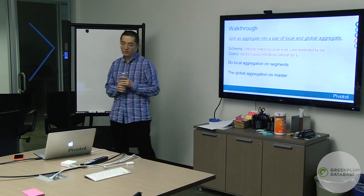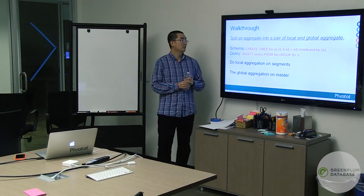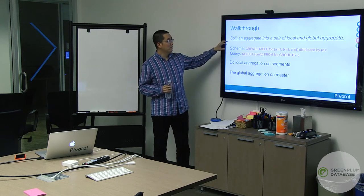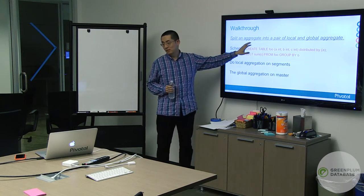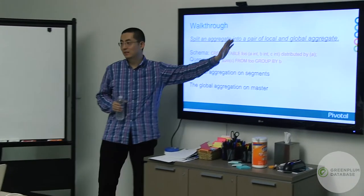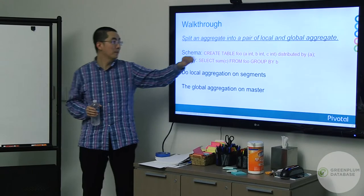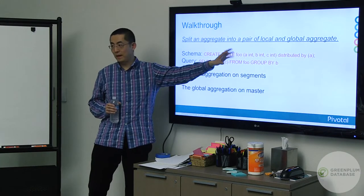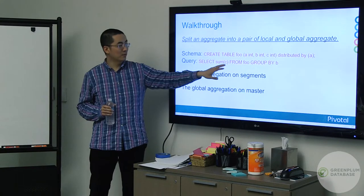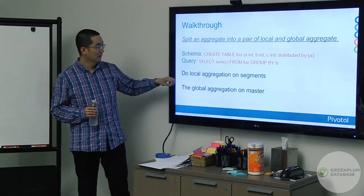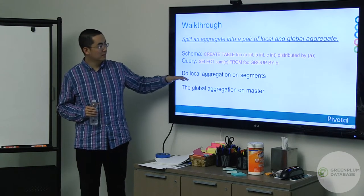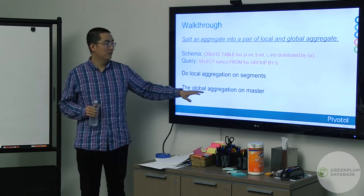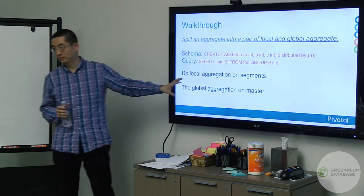We'll walk through an example where we try to add a transformation rule that is very common in the MPP environment: doing an aggregate split, where we split a single aggregate into a local aggregate and a global aggregate. For example, we have table FULL with three columns A, B, C distributed by A, and the query asks for SUM of C from FULL grouped by B. The idea is that if we do all local aggregates on segments first, dramatically reducing rows, and then do global aggregation on master, the query speed will be optimal.